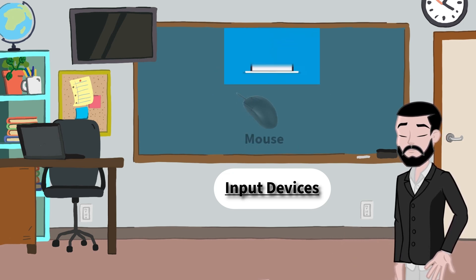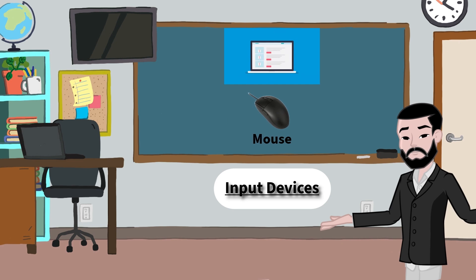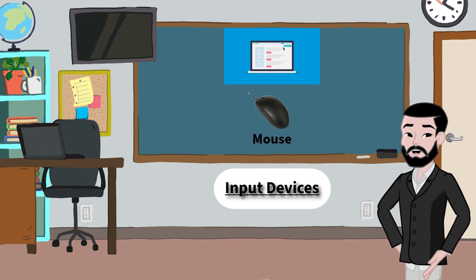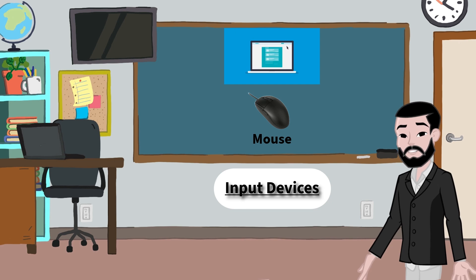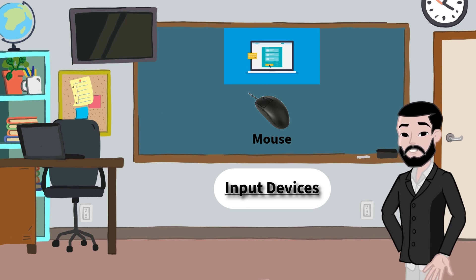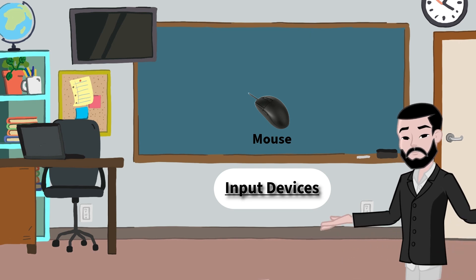Next is the mouse, not the animal, of course. This little device lets you move a pointer on the screen, click buttons, and open things. The mouse is great for playing games, clicking on apps, drawing shapes. It's like your hand inside the computer.